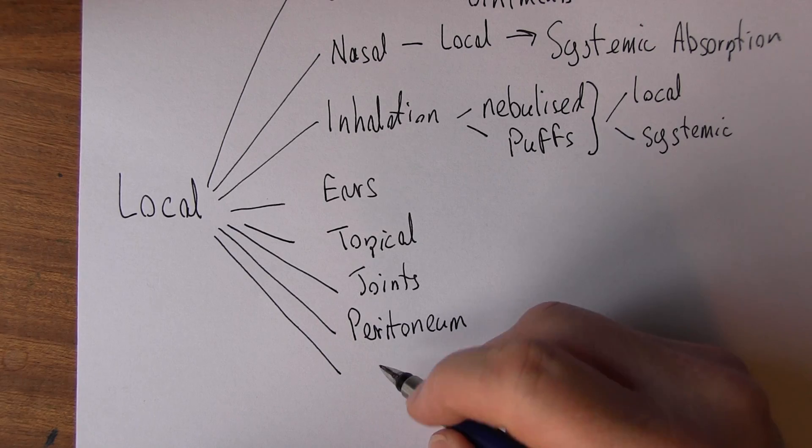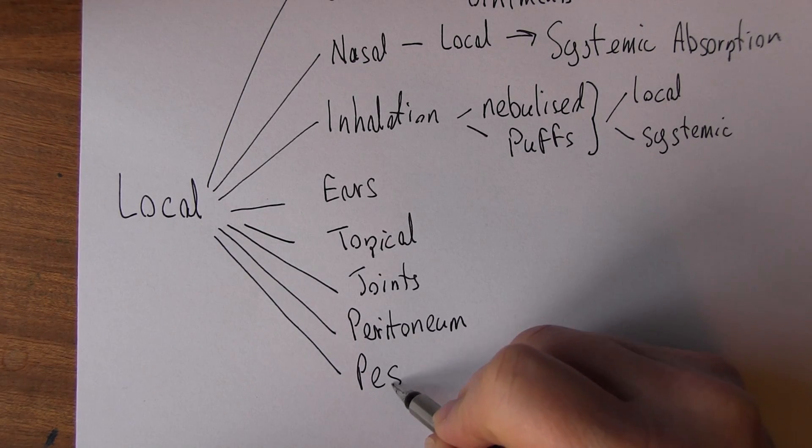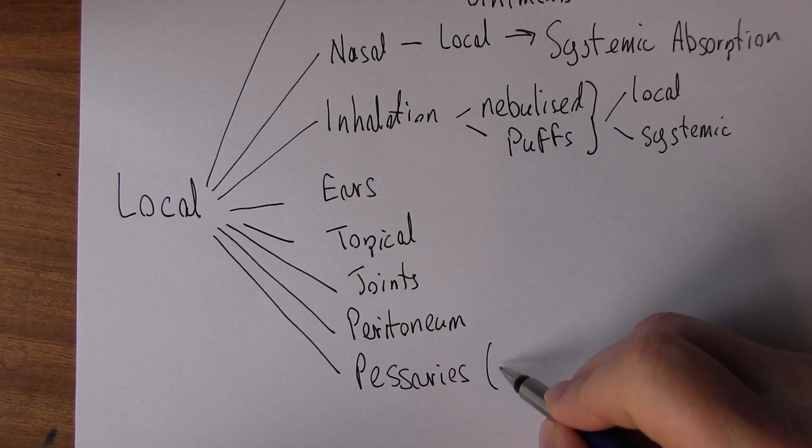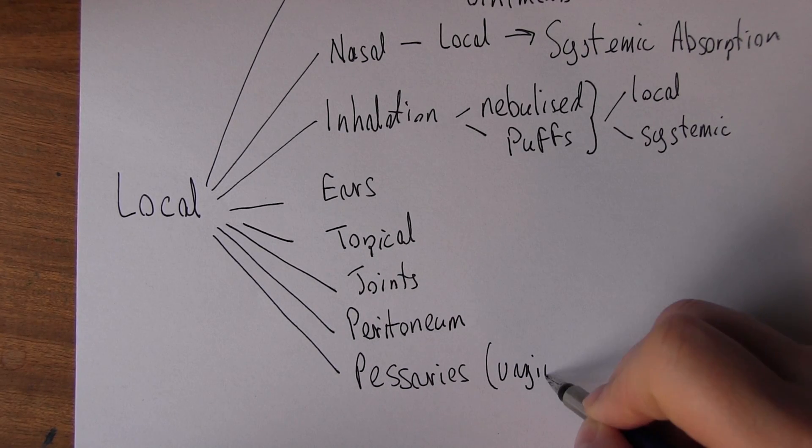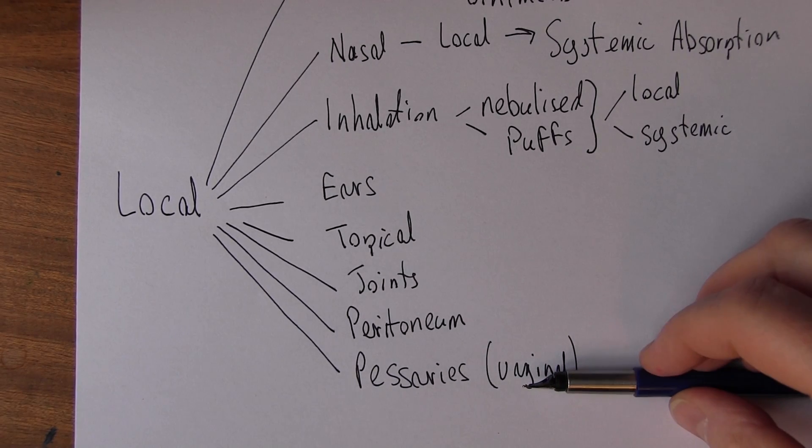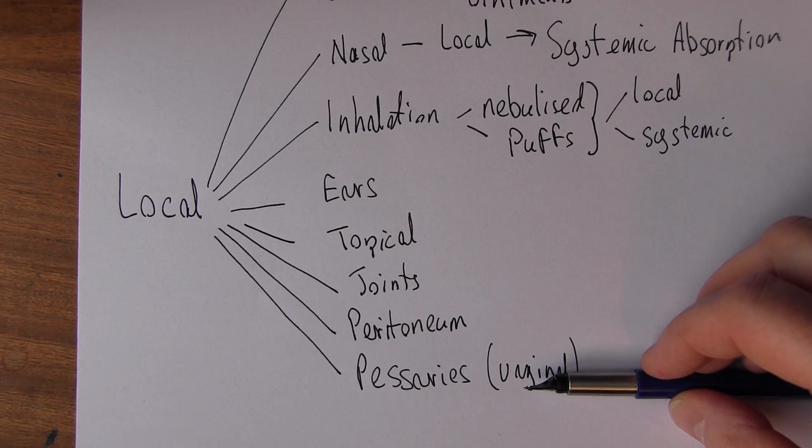You can call these pessaries or vaginal suppositories. Pessaries or vaginal suppositories are preparations we would insert directly high into the vagina, such as antifungal preparations if there was a candidal infection, for example.